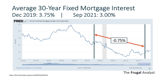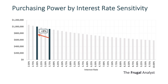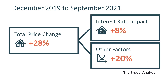To calculate the impact of interest rates, we go back to the purchasing power sensitivity chart and look at the 3.75% bar and the 3% interest rate bar. We can see the difference between the two is roughly around 8%. So of the 28% increase in home price, 8% is due to interest rates, and the remaining 20% is due to other factors like supply and demand and inflation. Another way to say it is that 30% of the increase in home price is due to the change in interest rates.